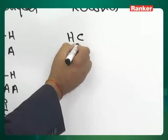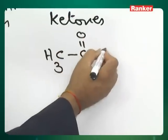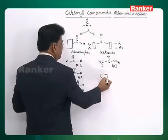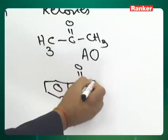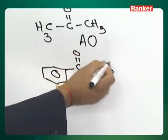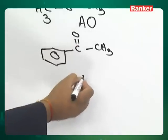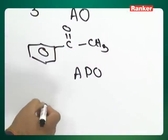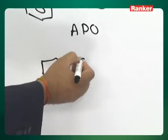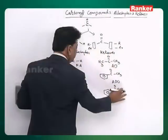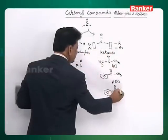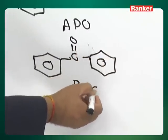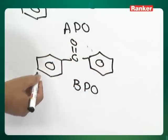Similarly, under ketones, we have three very popular compounds. When both sides are methyl, it is called acetone — it is a ketone. When one side is benzene and one side is methyl, the CH3CO function is called 'acet,' and with phenyl and ketone, it is called acetophenone. When both sides are phenyl or benzene, it is called benzophenone.